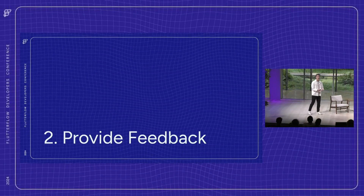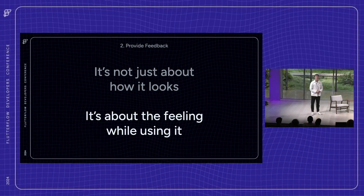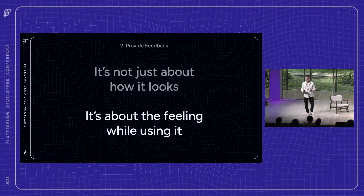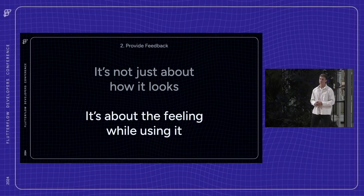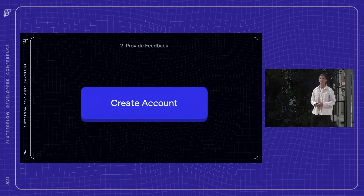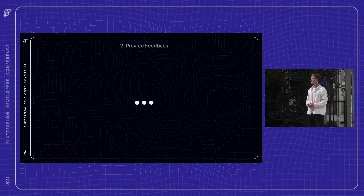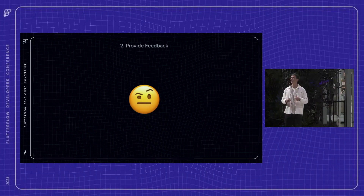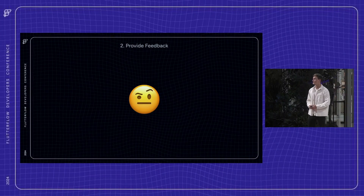Next is providing feedback. Because when we talk about crafting exceptional user experiences, it's not just about how something looks — it's how users feel while using that application. And feedback is what keeps them connected to that experience. Imagine you click a button and you wait, and nothing seems to happen. There's no loading spinner, no progress bar. You're left wondering if the app even registered your action. That's why clear feedback is essential to keeping your users engaged.